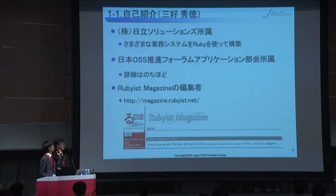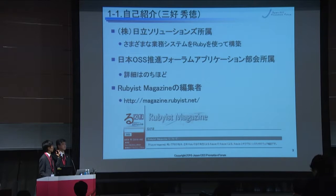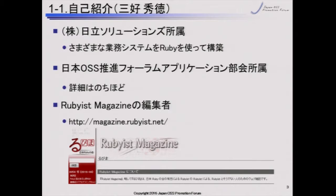For self-introduction: as introduced, my name is Hidenori Miyoshi. I work for Hitachi Solutions and use Ruby mainly for the development of business applications. Regarding the Japan OSS Promotion Forum, I am a member of the application subcommittee — details will be explained later. In my private life, I am an editor of a web magazine called Rubyist Magazine. The next edition is now in preparation, and after this presentation I will work harder for the release.